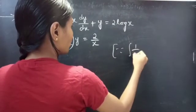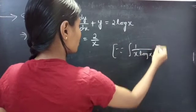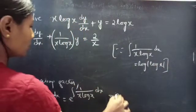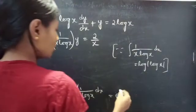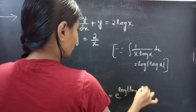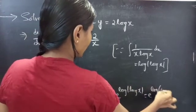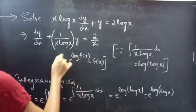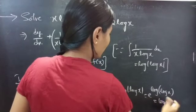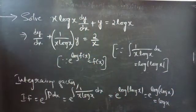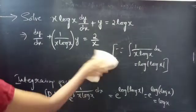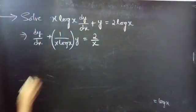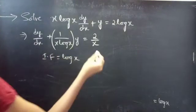Since ∫ 1/(x·log x) dx = log|log x|, the integrating factor becomes e^(log|log x|) = e^(log(log x)). We know that e^(log f(x)) = f(x), so this equals log x. Our integrating factor is log x. Let's call the standard form equation as equation 1.